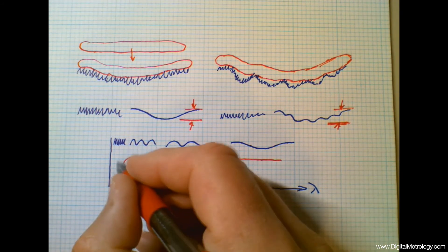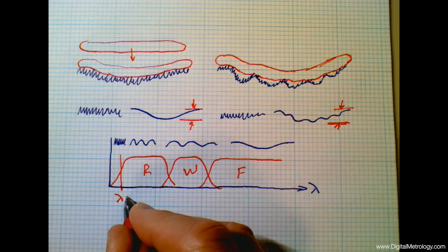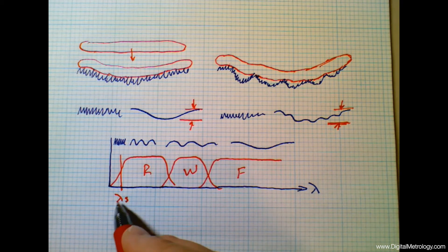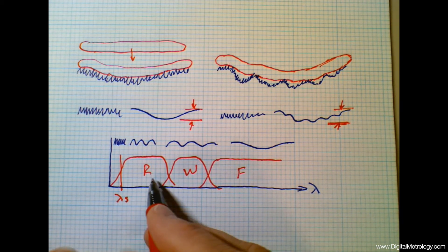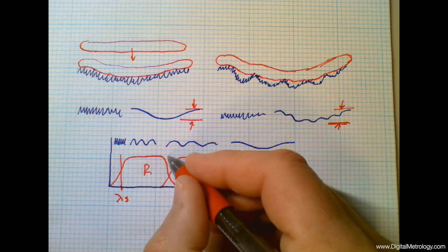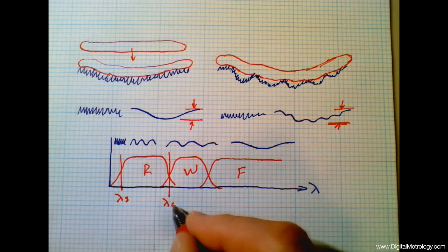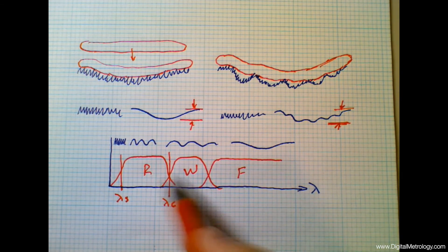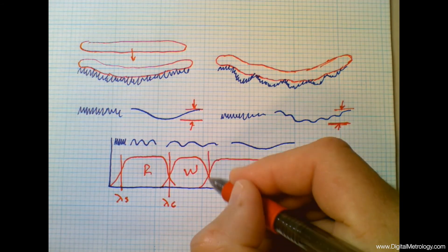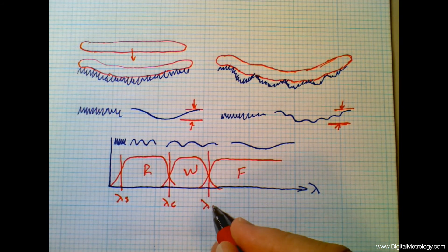And we separate these wavelengths with filter cutoffs. There's a filter cutoff that separates the short end of roughness from those things that we're discarding like cracks and pits and molecules. There's a filter cutoff wavelength that we call the cutoff wavelength, lambda c, that separates roughness from waviness. And there's another cutoff wavelength that separates waviness from form. And that's called the form cutoff.